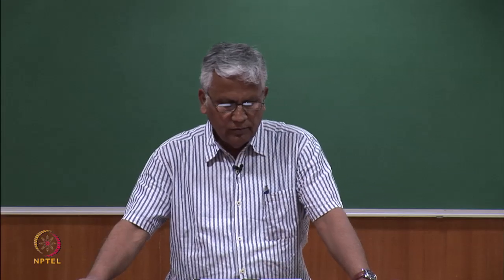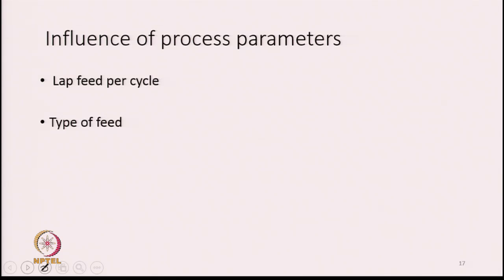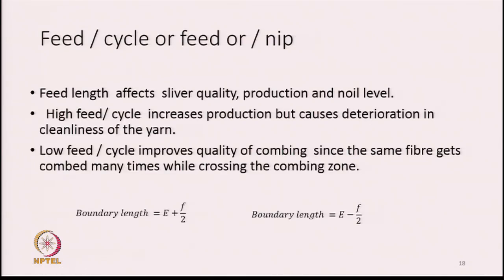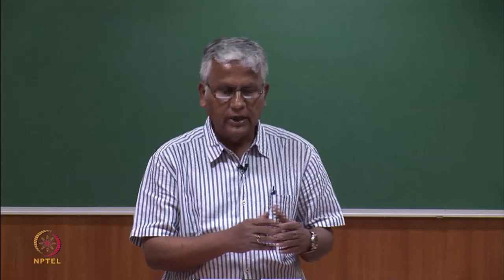Now, the influence of process parameters. There are two parameters: lap feed per cycle and type of feed. Lap feed per cycle is how much lap length is fed per revolution of the cylinder. Feed length affects sliver quality, production, and noil level — three important aspects of the machine are affected by the length of feed.